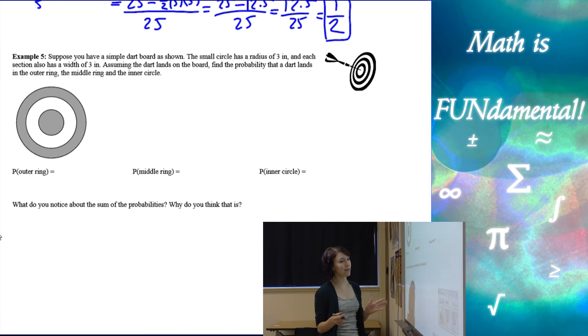Alright, and our last example. A little bit more going on here. So suppose you have a simple dart board shown here. The small circle has a radius of 3 inches. So let's start drawing on our picture. Small circle has a radius of 3 inches and each section also has a width of 3.